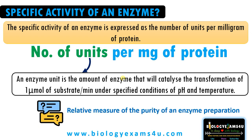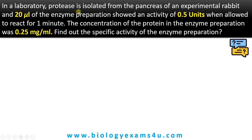We will be working out two problems to understand how to calculate specific activity of an enzyme. In a laboratory, protease is isolated from the pancreas of an experimental rabbit, and 20 microliters of the enzyme preparation showed an activity of 0.5 units when allowed to react for one minute. The concentration of the protein in the enzyme preparation was 0.25 mg per ml. Find out the specific activity of the enzyme preparation.